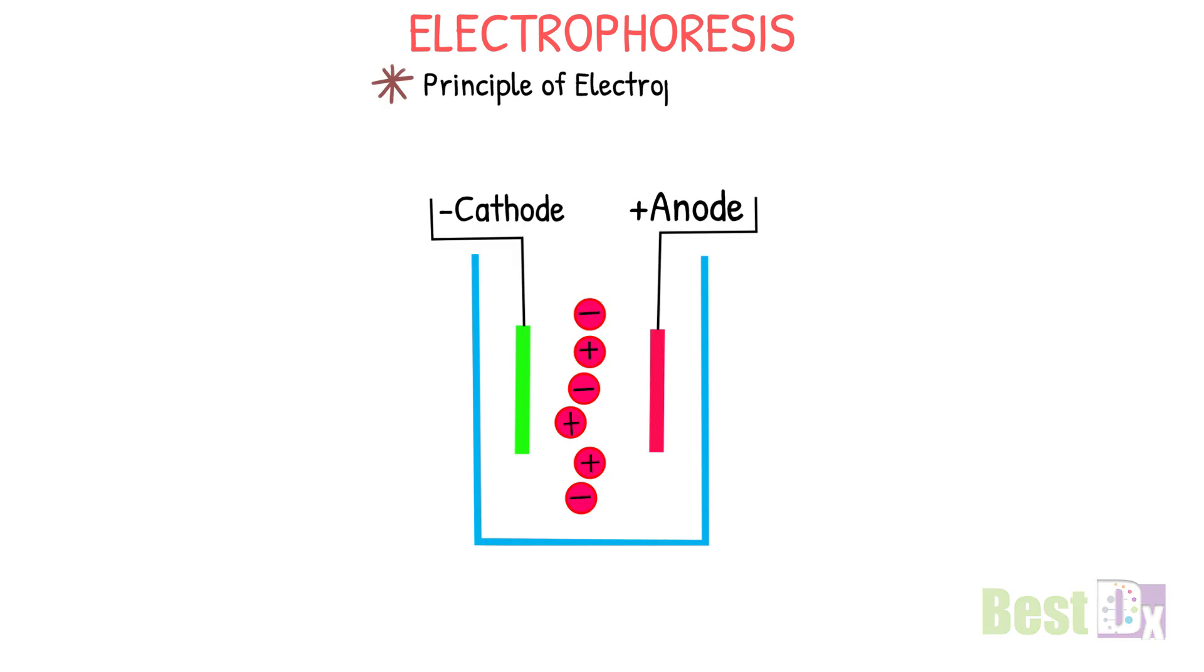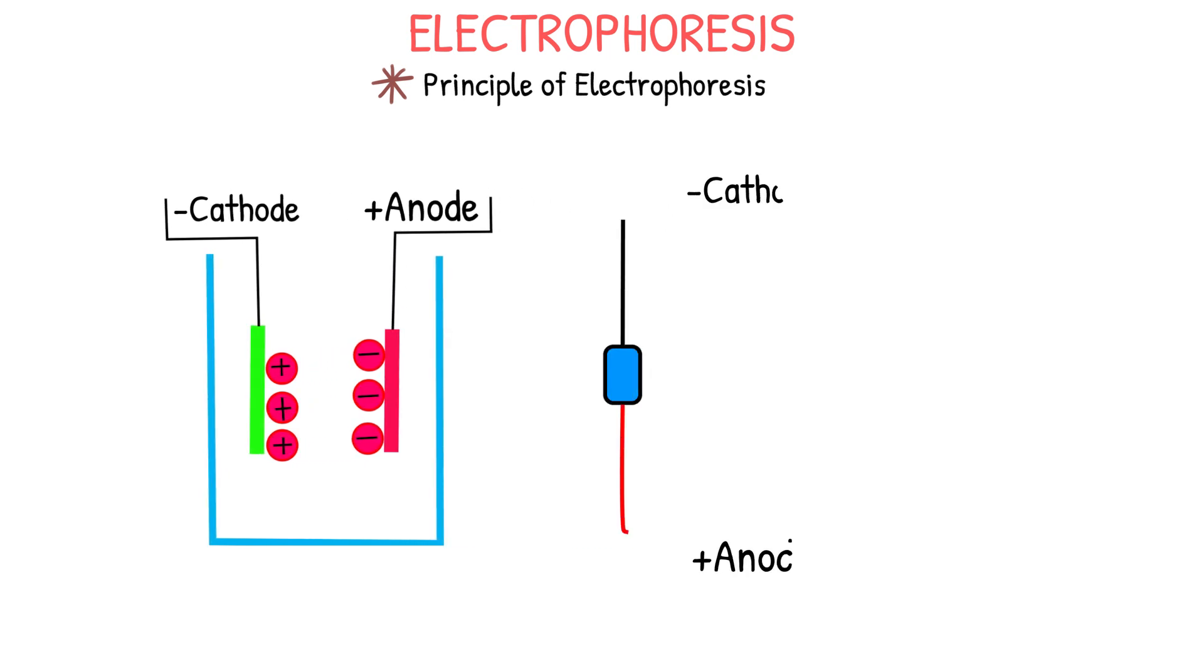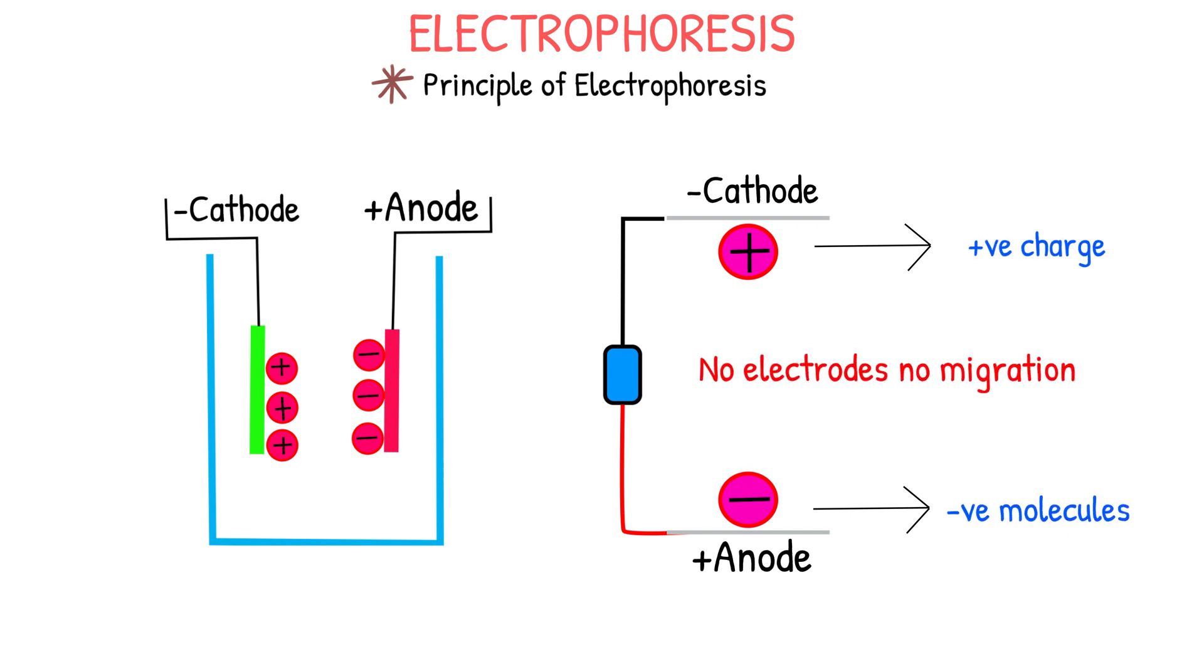Electrophoresis is a method of separation wherein charged particles migrate at different speeds in an applied electric field. We know that charged molecules under the influence of the electric field migrate towards oppositely charged electrodes. Those molecules with a positive charge move towards the cathode, and negative molecules move towards the anode. So the migration is due to the charge on the molecules and the applied electrodes. No electrodes, no migration.